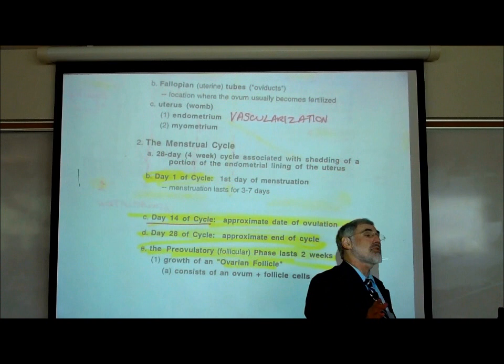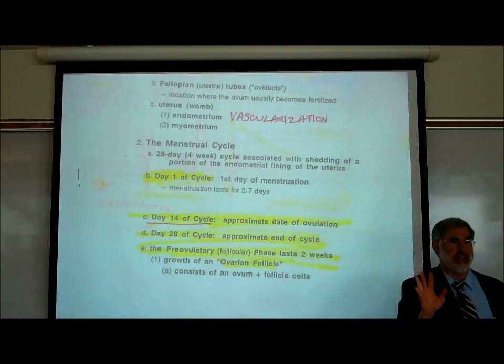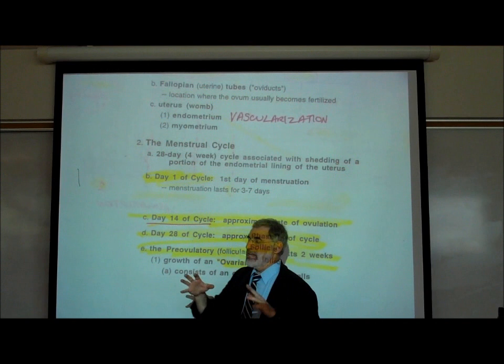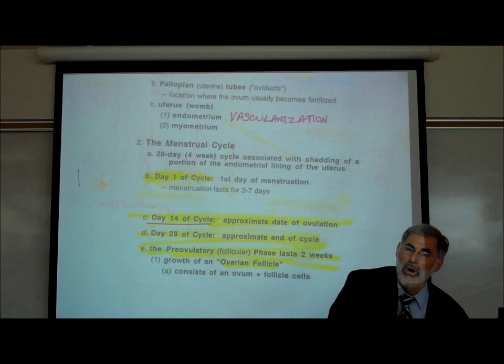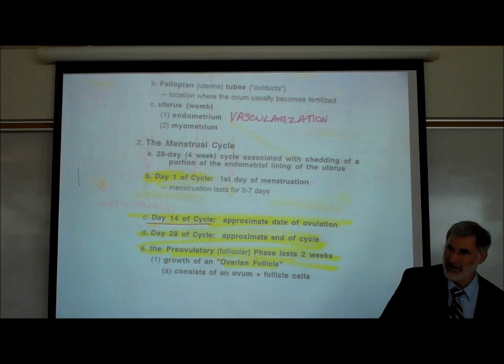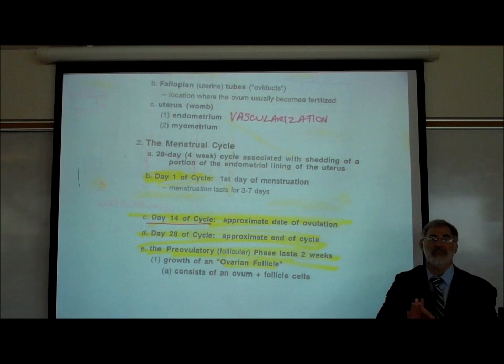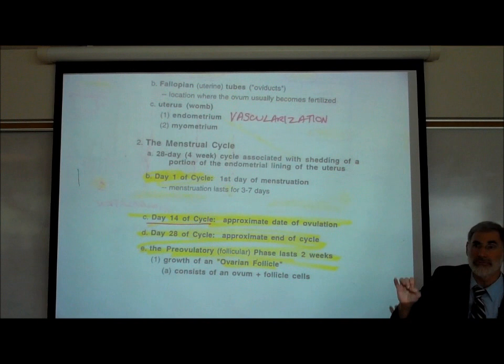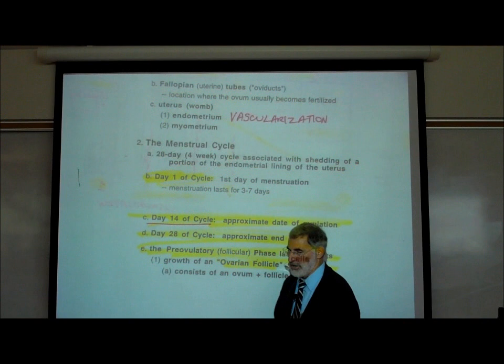Day one of the cycle is defined as the first day a woman notices menstruation — a loss of blood and fluid out the vaginal canal. That's the most obvious point in the cycle. The first day she starts to menstruate is day one, because it's the one thing that is very obvious physically. The period lasts three to seven days, and how heavy or light it is depends on how much progesterone there is.